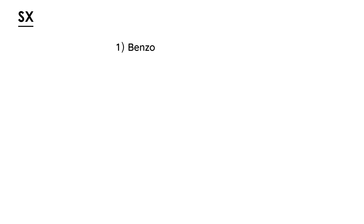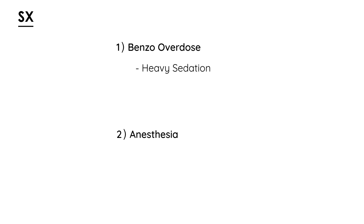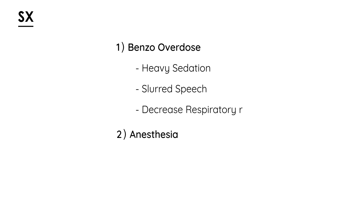The first scenario is the basic benzo overdose in someone taking it for anxiety. The symptoms are very heavy sedation — the patient took too much of a benzodiazepine. They can also have slurred speech and a very decreased respiratory rate. Normal respiratory rate is between 12 and 20; they might be down to 8 breaths per minute.